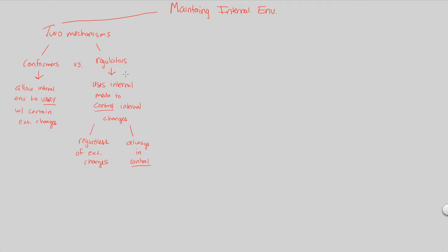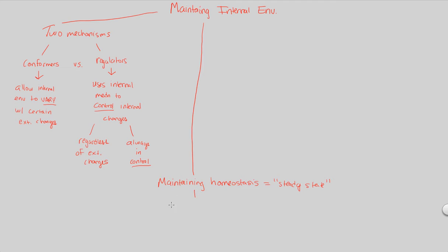Both conformers and regulators play a role in maintaining an internal environment, with one playing a stronger role when maintaining homeostasis. Maintaining the internal environment is essentially about maintaining homeostasis — a very important state of any organism's body. Homeostasis translates to the maintenance of a steady state, meaning the internal condition is balanced.